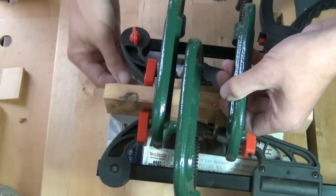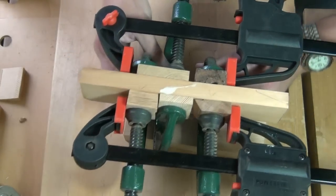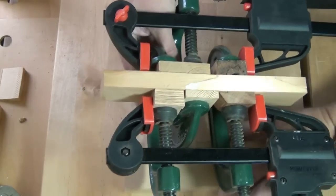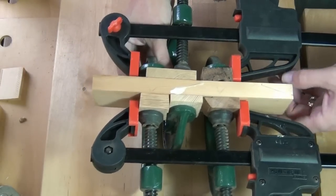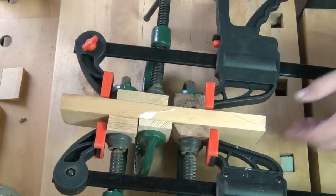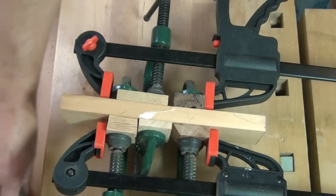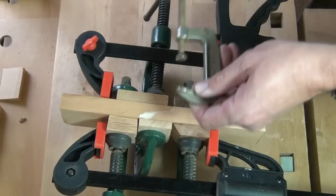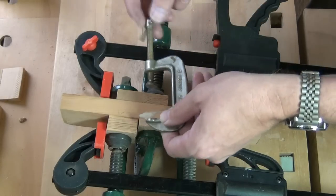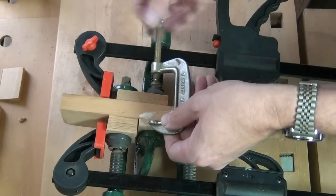Now I can flip that over and I can put a further clamp just across this side of the joint just so that we've got good pressure right the way across.